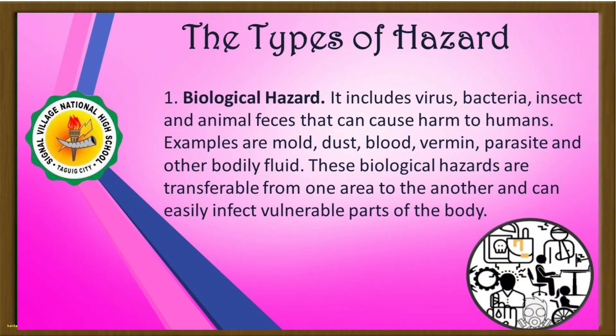Types of hazard. Number 1: Biological hazard. It includes viruses, bacteria, insects, and animal feces that can cause harm to humans. Examples are mold, dust, blood, vermin, parasites, and other bodily fluids. These biological hazards are transferable from one area to another and can easily affect vulnerable parts of the body.